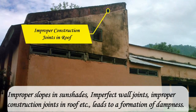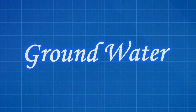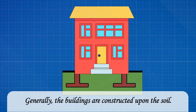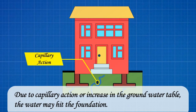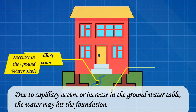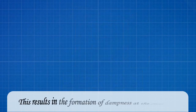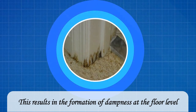Groundwater: generally, buildings are constructed upon the soil. Due to peculiar reactions or an increase in the groundwater table, water may reach the foundation. This results in the formation of dampness at the floor level.